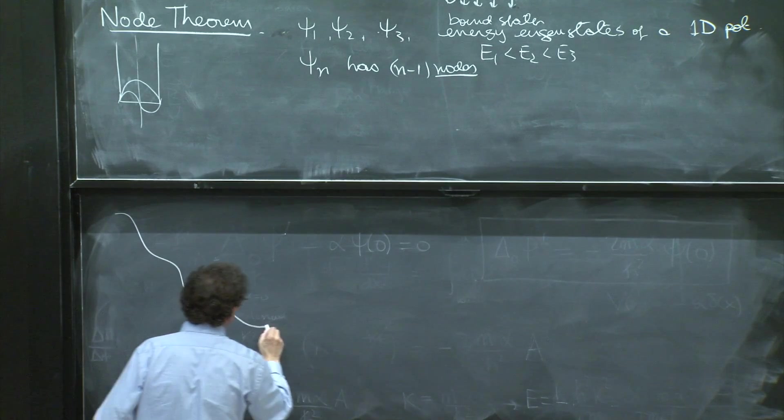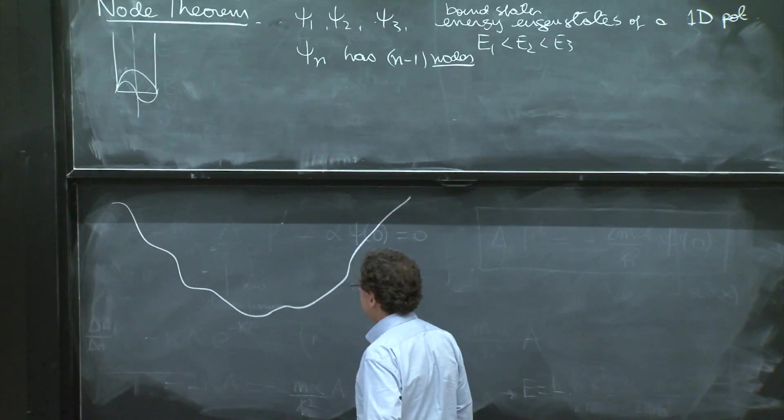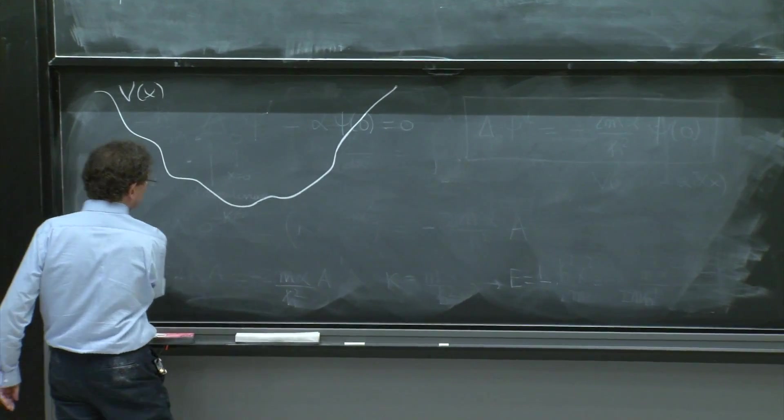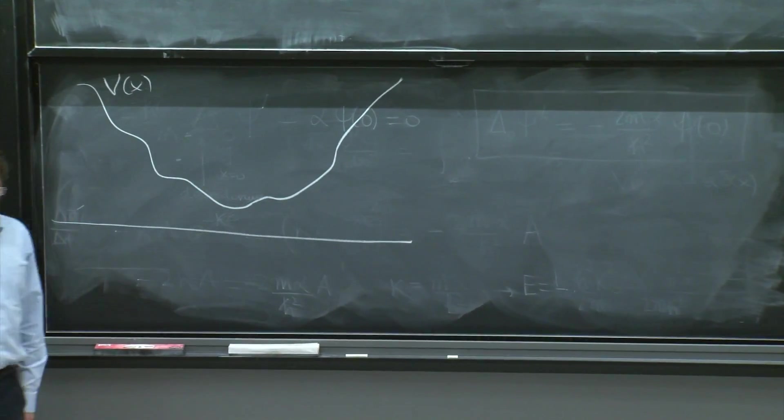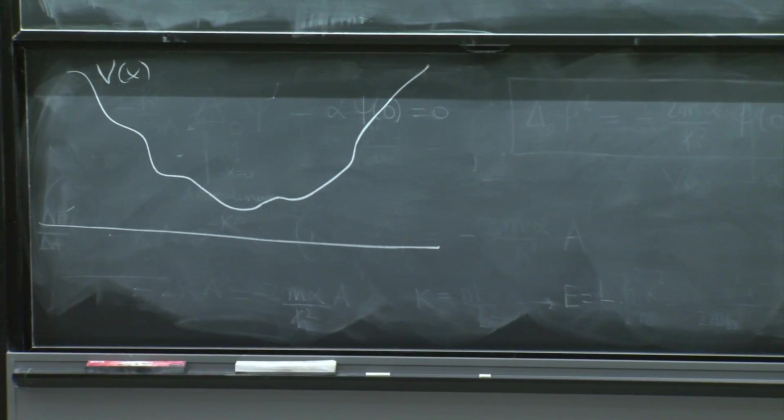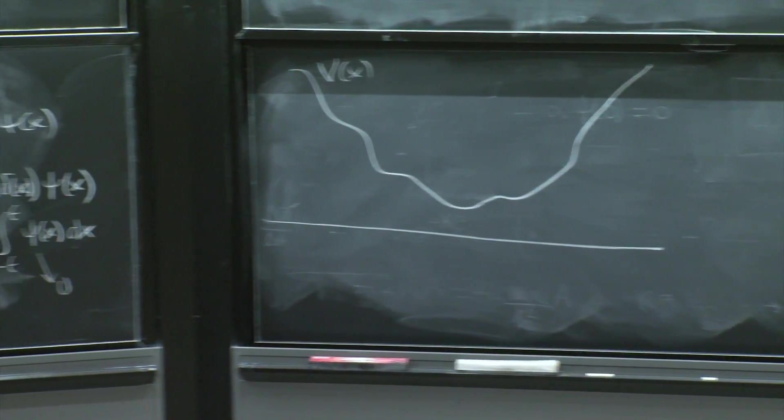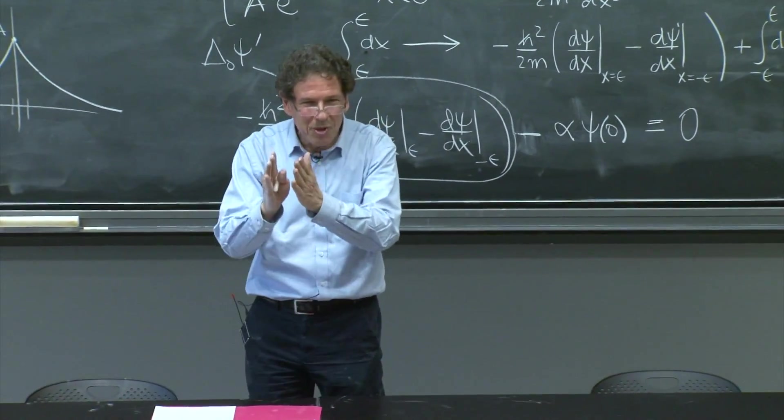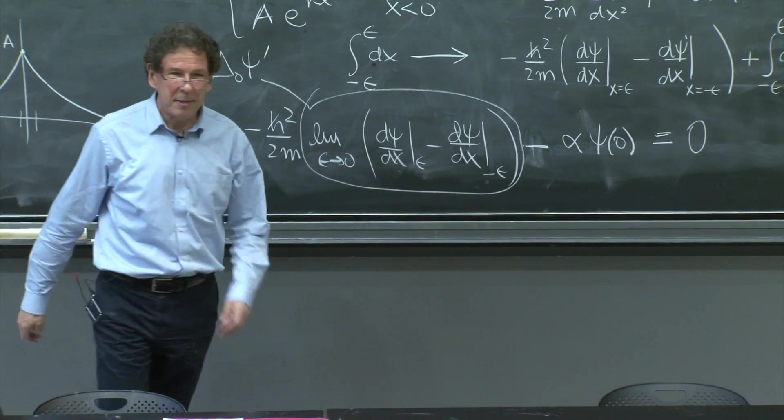Suppose you have a potential like this, v of x. And I want to argue that this potential will have bound states that will have no node, one node, two nodes, three nodes. How could I argue that?